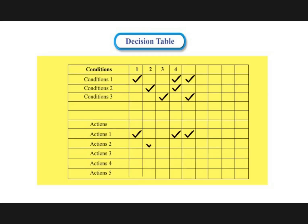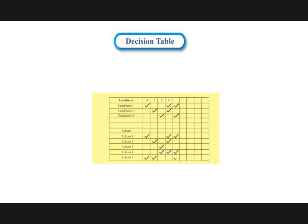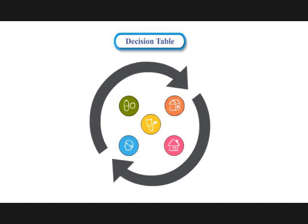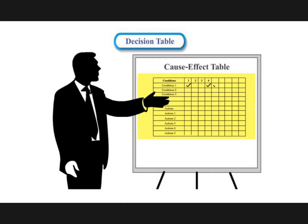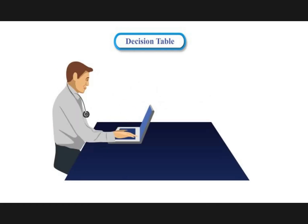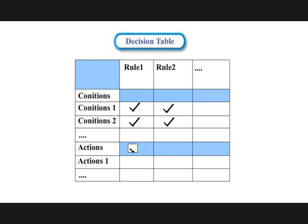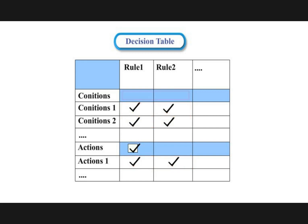A decision table is a good way to deal with combinations of things, such as inputs. This technique is sometimes also referred to as a cause-effect table. Decision tables are used to model complicated logic and can make it easy to see that all possible combinations of conditions have been considered and to identify when conditions are missed. Let's watch the e-lecture and video lecture for more information about the need for decision tables.